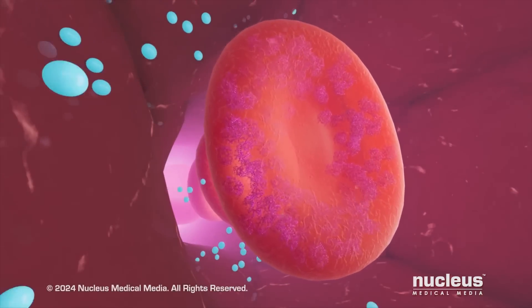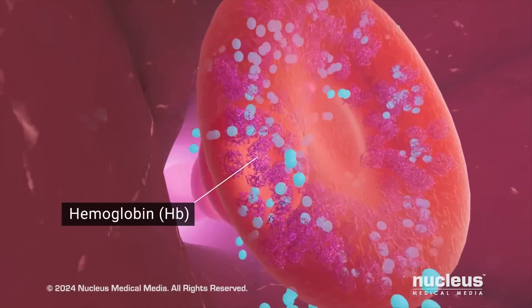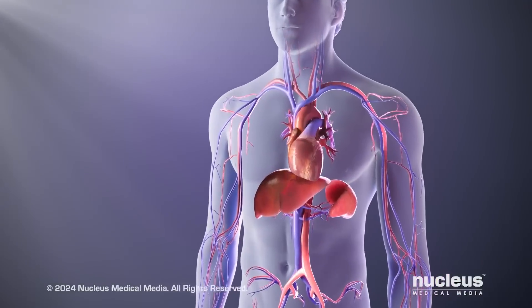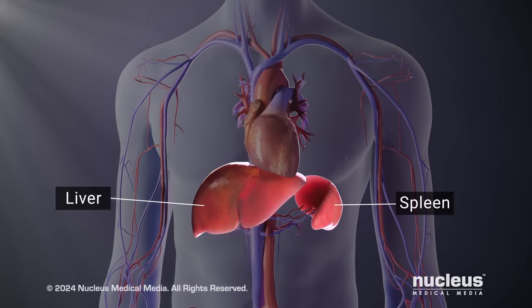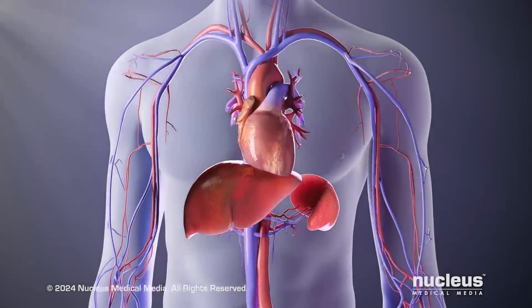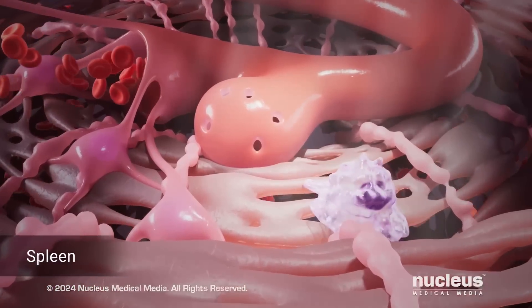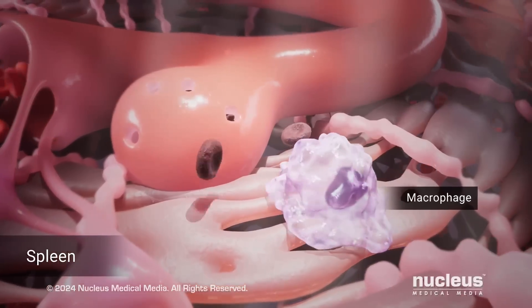Oxygen attaches to proteins inside your red blood cells, called hemoglobin. Your red blood cells then deliver the oxygen to tissues throughout your body. After about three months, red blood cells wear out. As the worn-out cells pass through your liver and spleen, other types of blood cells, called macrophages, destroy them and remove them from your blood.